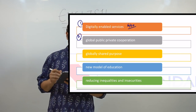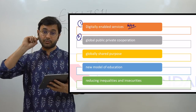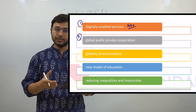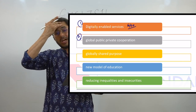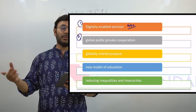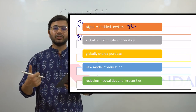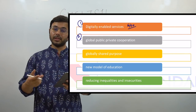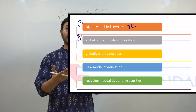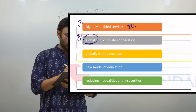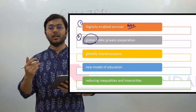Second is global public-private cooperation. Public-private cooperation increases with digitization. Imagine that in government schools, private enterprises or NGOs use digital technologies to provide better education — quality improves while government schools still provide free education. This will have a positive ripple effect on employment levels and skill levels of those students. Global public-private cooperation through digitization can start a new wave of how public-private partnerships work.